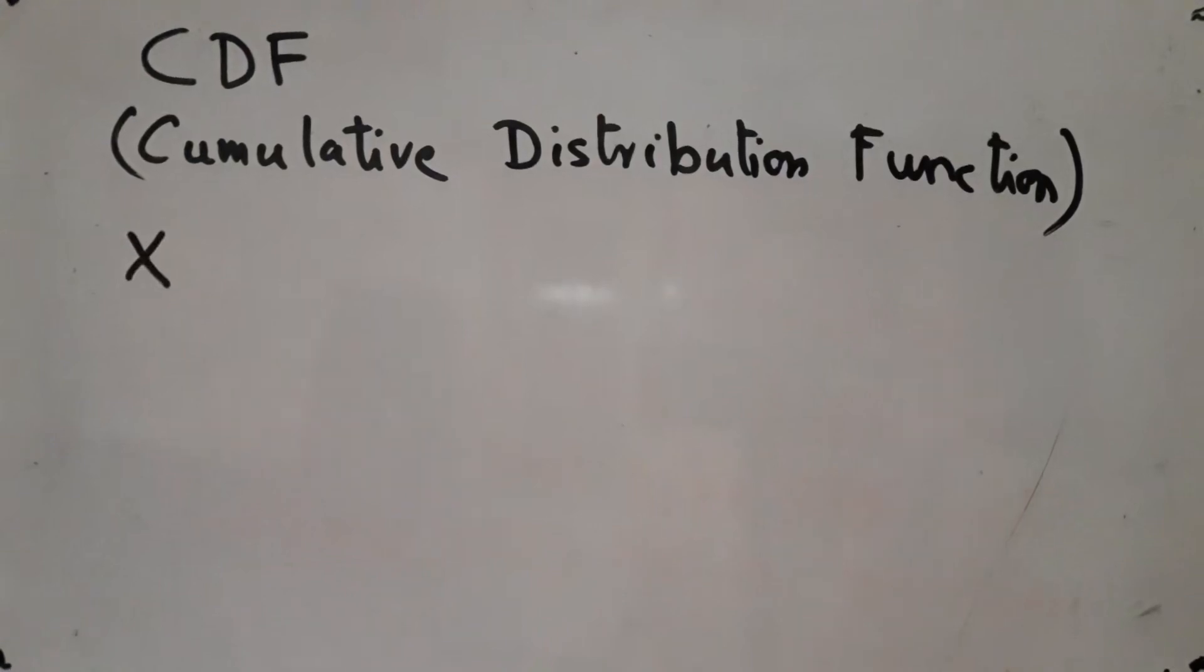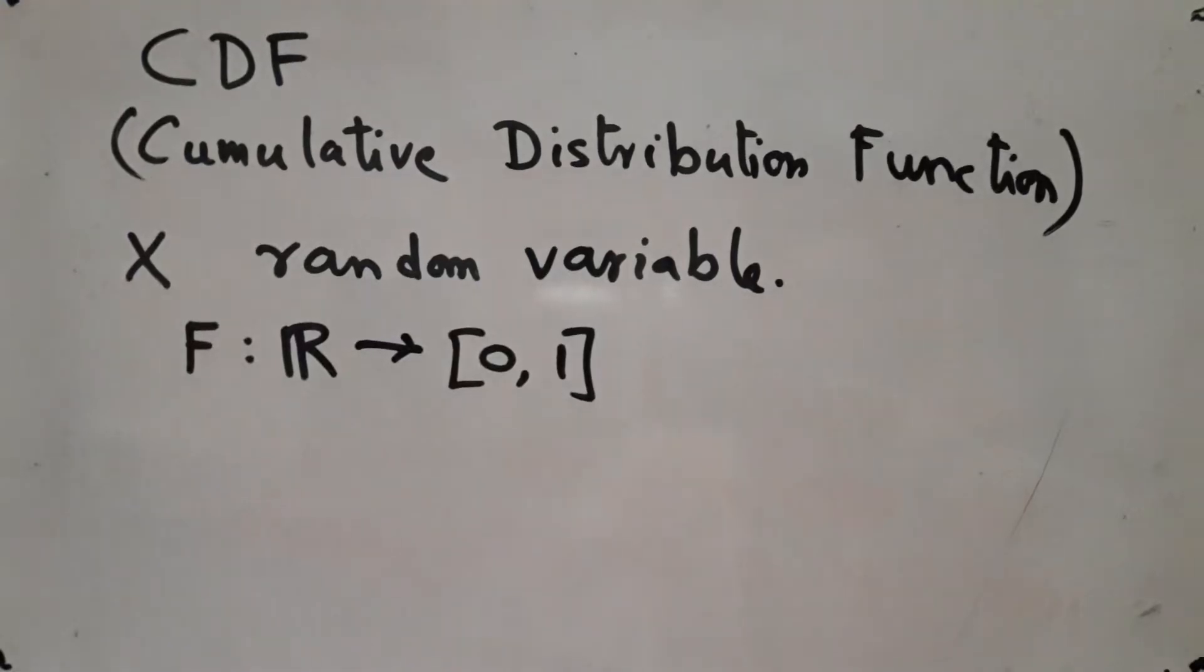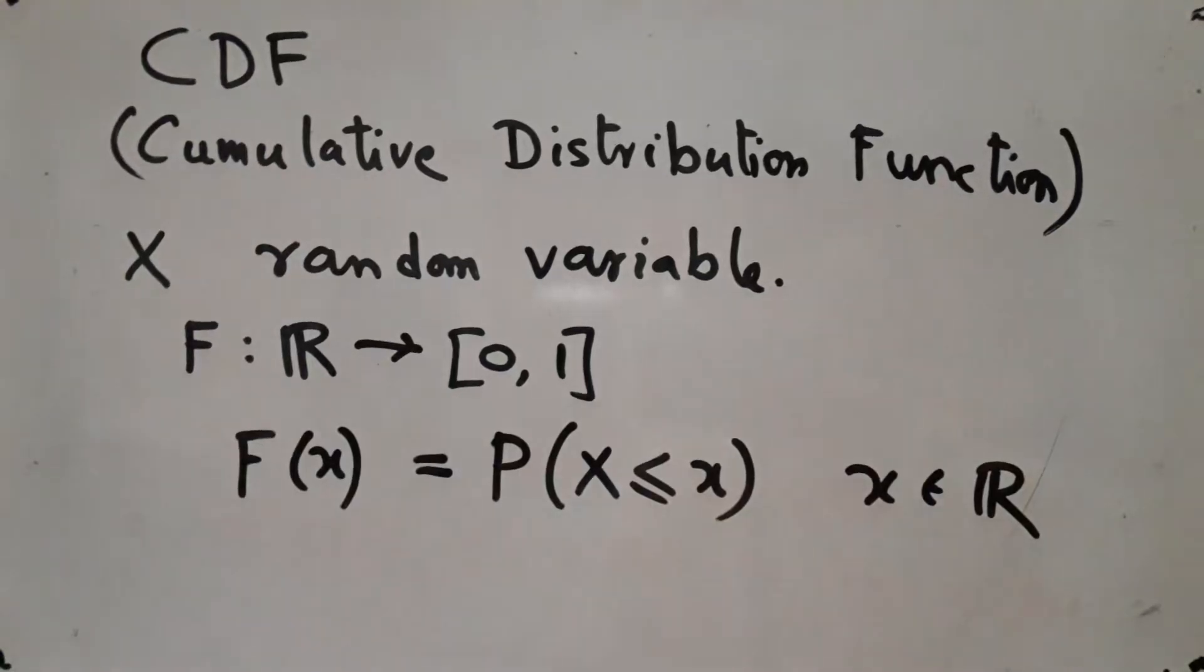Suppose that X is a random variable. Then by its CDF or cumulative distribution function we mean a function from R to [0,1] such that for all x in R, F gives the probability that our random variable is less than or equal to x.